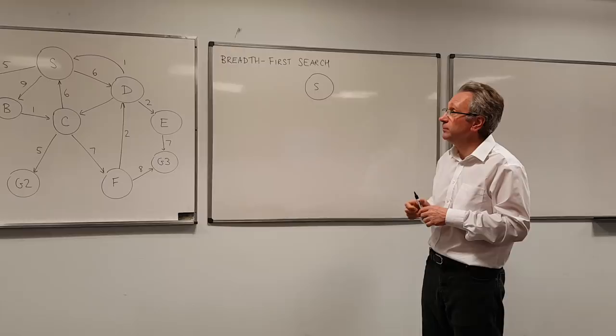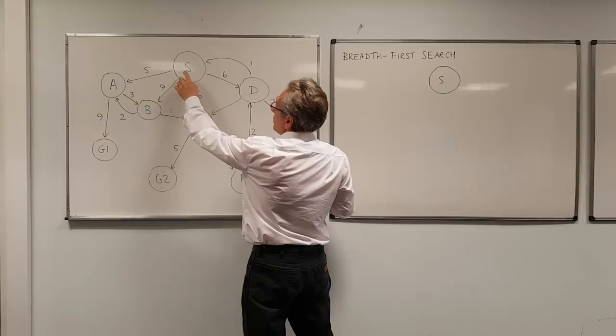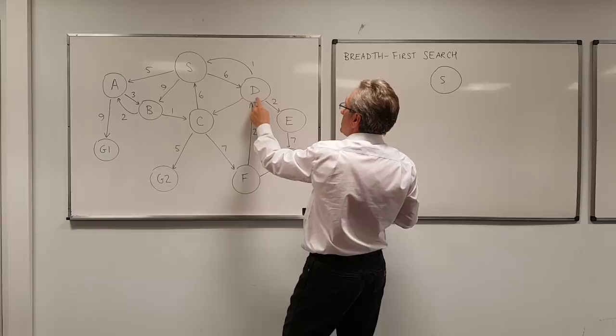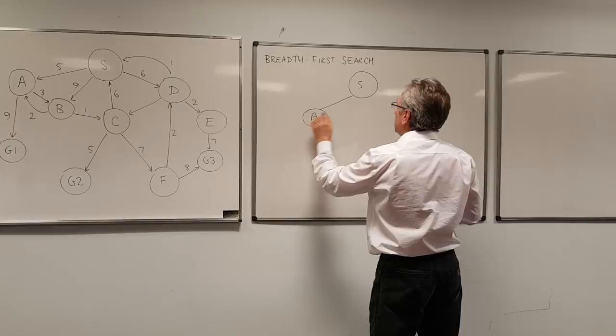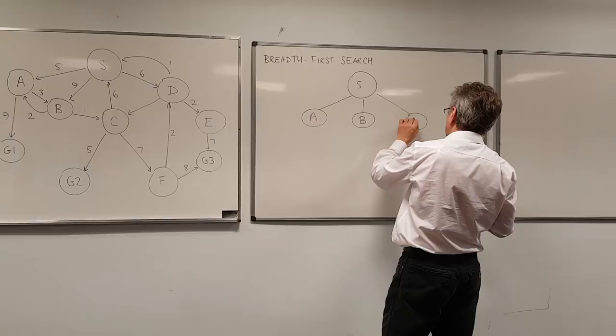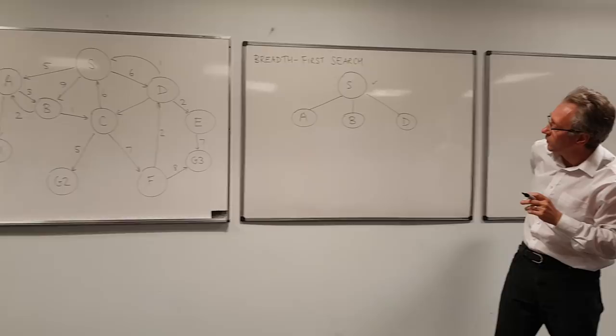And that's called expanding a node. So in order to find where I can go to, I look at the search space. So from S, I can go to A, I can go to B, or I can go to D. So I'm going to put all of those into my tree, like this. A, B, and D. And S has now been expanded, so I'll put a tick next to it.